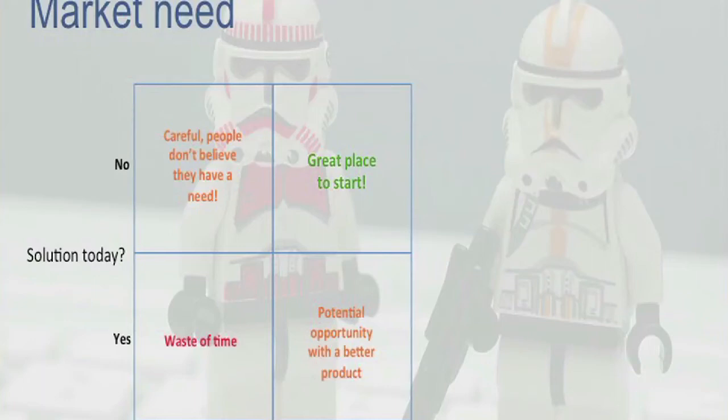But the best place to start is really where there isn't a solution today and people are really, really unhappy with the fact that there isn't one. This is what some people call the white space. So if you can find a white space where no apps exist today, and by speaking to people you identify that they would love to have an app that could solve that important challenge for them, then you are starting out with a high probability of creating a successful product.